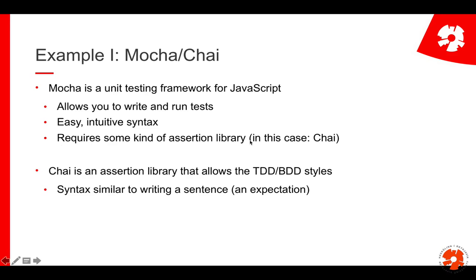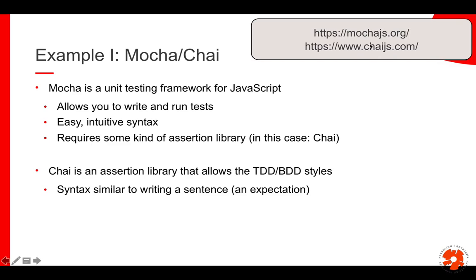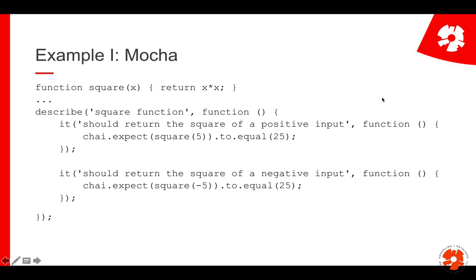Mocha requires an assertion library — that's always the case in unit testing. In every test you typically do assertions: you check whether, for example, a return value is what you expected. One of those assertion libraries is Chai. Chai allows different styles according to the test-driven or behavior-driven development paradigm. The syntax looks a bit like writing a sentence. These frameworks are all very similar — whenever you use a different unit testing framework you'll recognize a lot of similarities.